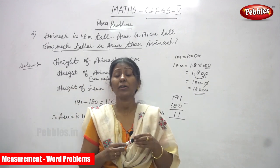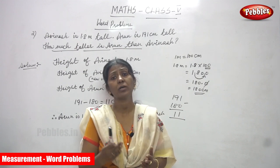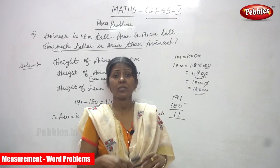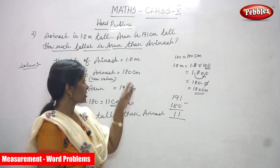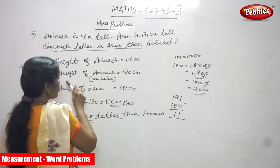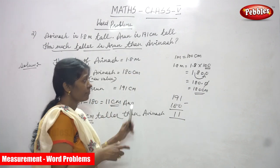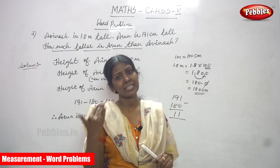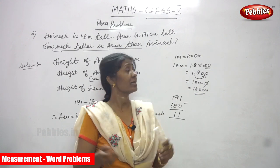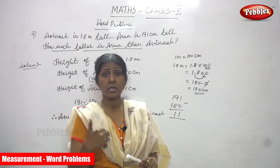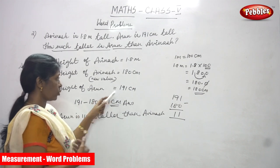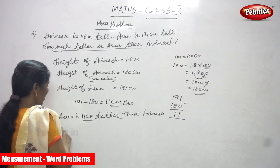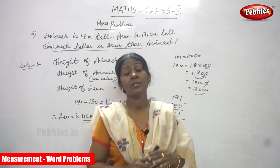So first, if the units are different, you have to convert the units into the same. Then you proceed — maybe it is addition, subtraction, multiplication, or division. But in this sum, we are doing only subtraction because they are asking how much Arun is taller than Avinash. First write height of Avinash as 1.8 meters. Unit is different, so convert meter into centimeters: 1.8 into 100 gives 180 centimeters. Arun's height is already given as 191 centimeters. Arun is taller. Subtract 191 minus 180 to get 11 centimeters. Therefore, Arun is 11 centimeters taller than Avinash. This is the right answer.